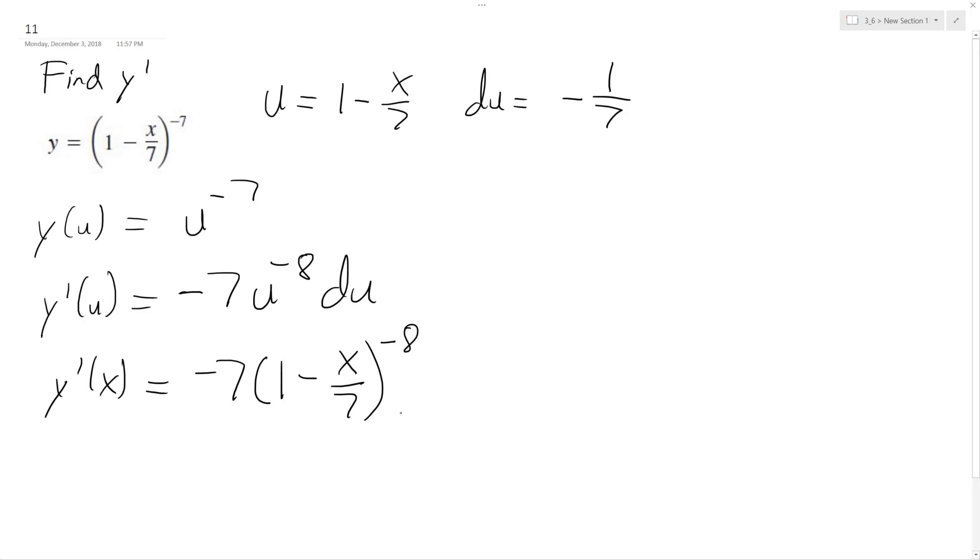Times, and then we sub back in our du, which is negative 1 over 7.